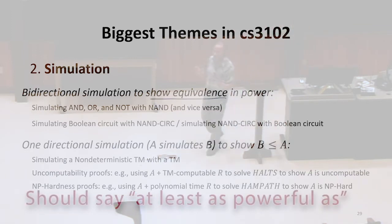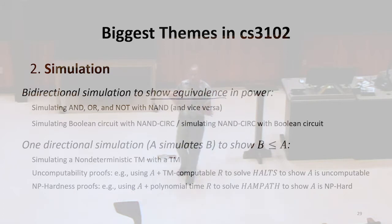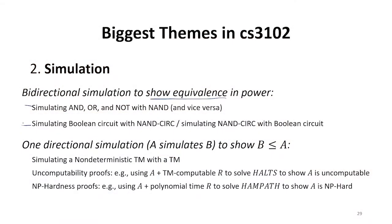We saw a simulation that we can simulate a Boolean circuit with a NAND-CIRC straight line program and vice versa. That means they're equivalent if one can simulate the other, and the other can simulate one in both directions. And we saw the same thing with gate sets for Boolean circuits.